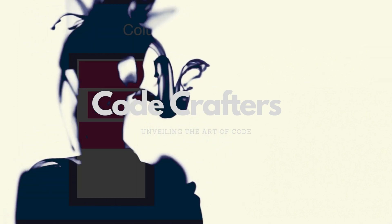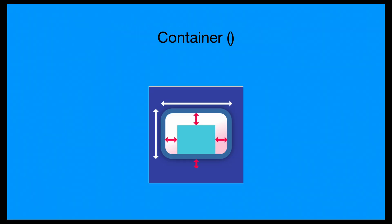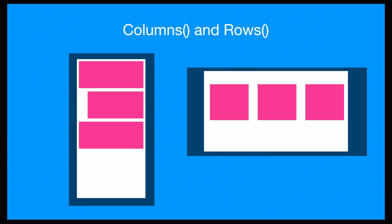It's all very well and good using a container to lay out a single widget such as a piece of text or an image — we can define its padding, margin, size, background color, etc. But what if you had lots of different things that you want to lay out relative to each other? In that case you need something that can take lots of children, not just a single one.